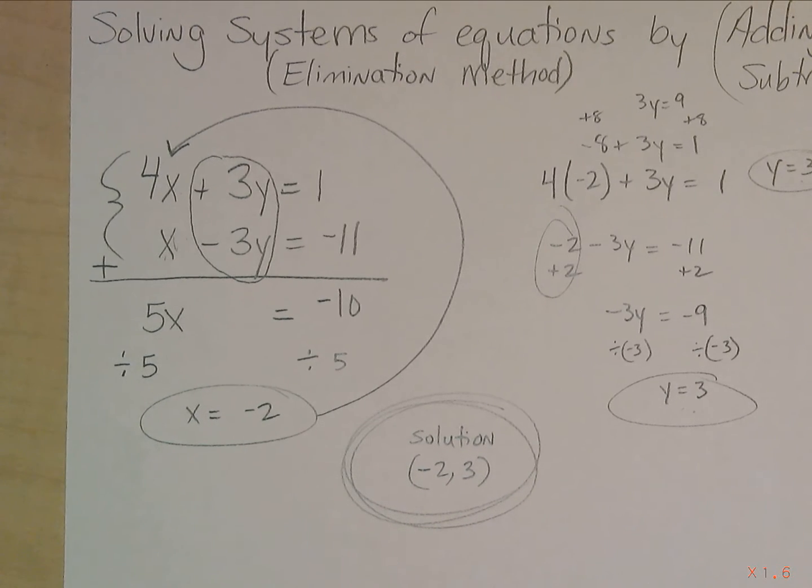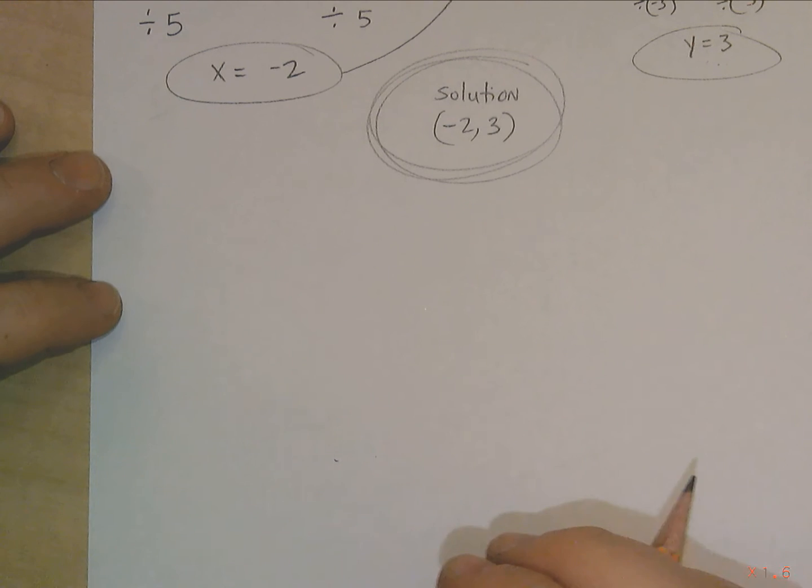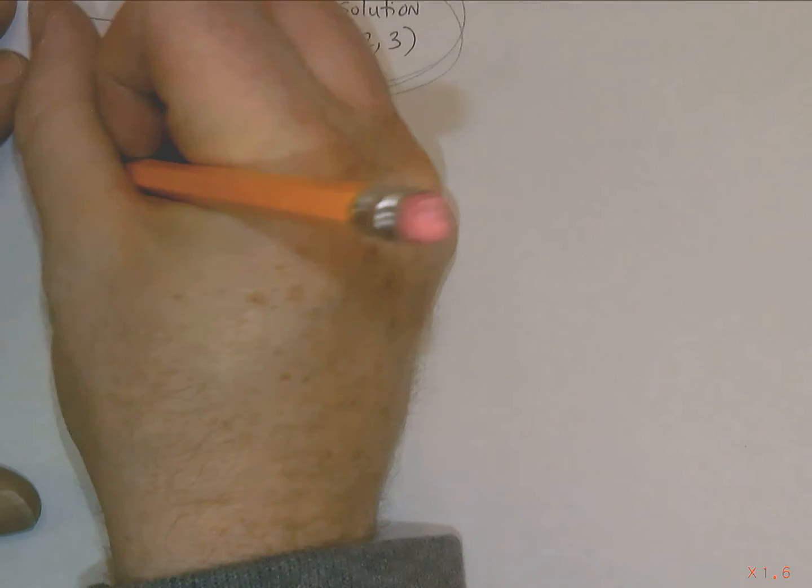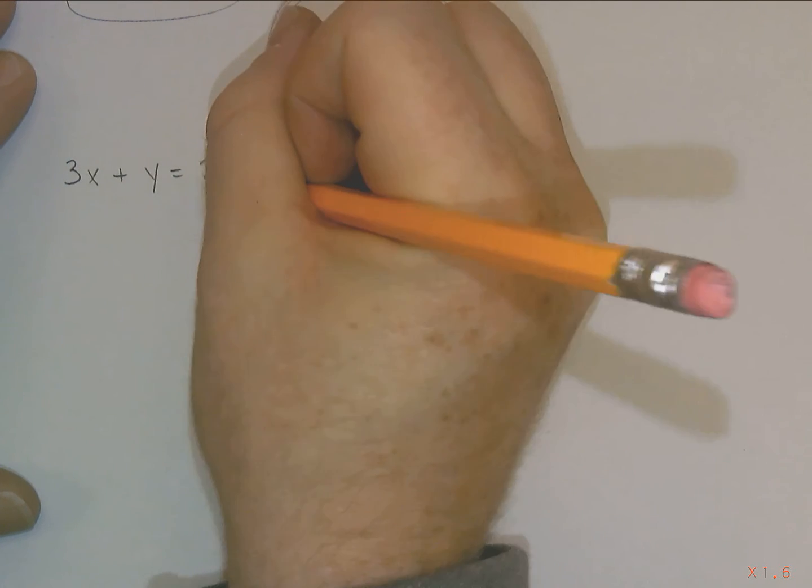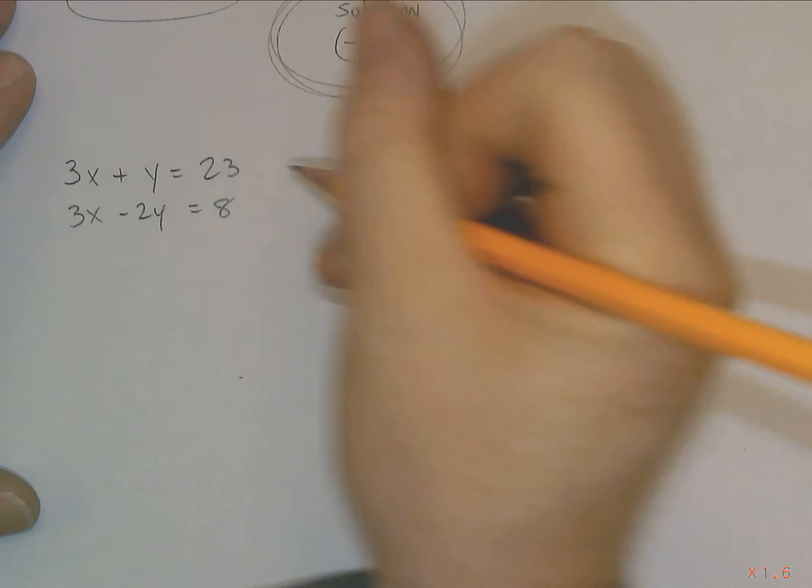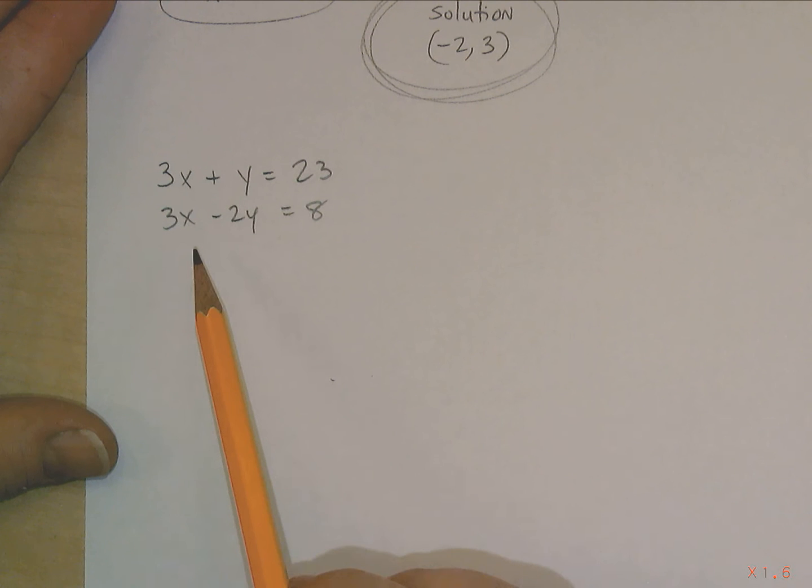Another one we can do is very similar, but the difference here, this one is going to be a little bit more like subtracting. So you're going to see why here in a second. So if you've got this system here, if you notice, 3x, you have the same exact variable and coefficient.